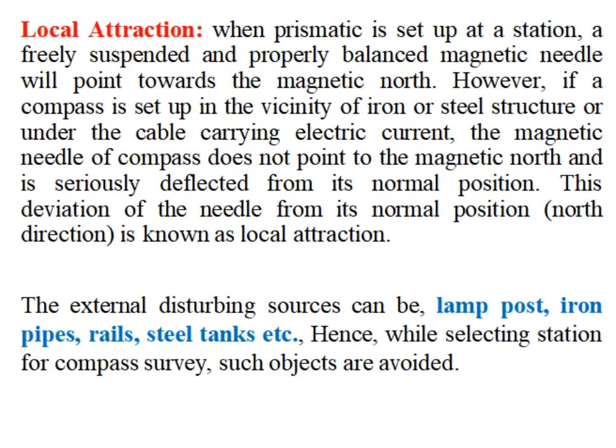Local attraction: when the prismatic compass needle is freely suspended and properly balanced, it will show the magnetic north. However, when the compass is set near iron or steel structures, or under cables carrying electrical current, the magnetic needle does not show exactly the magnetic north. This deviation of the needle is called local attraction.